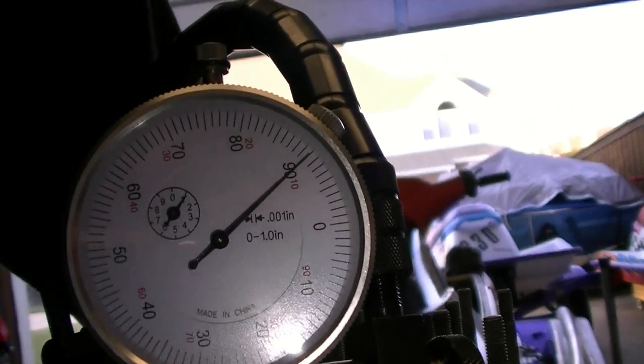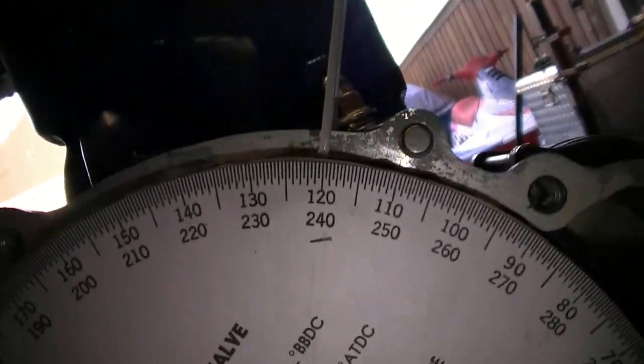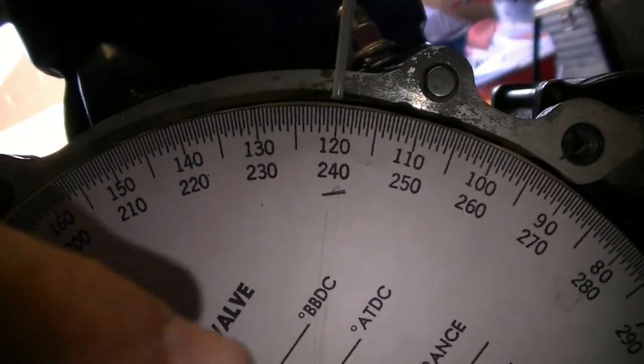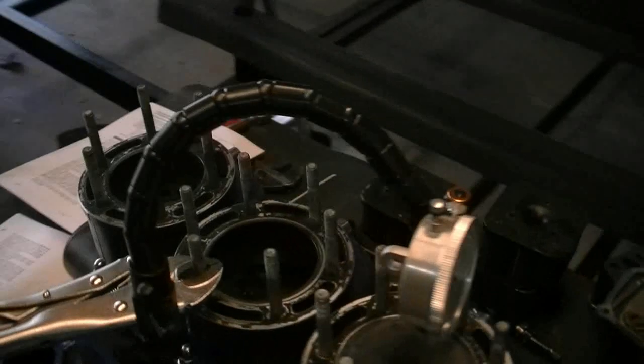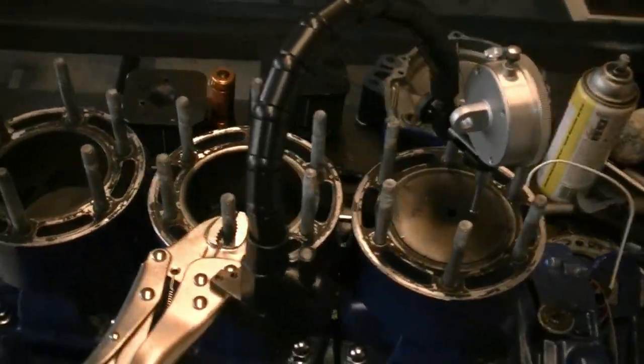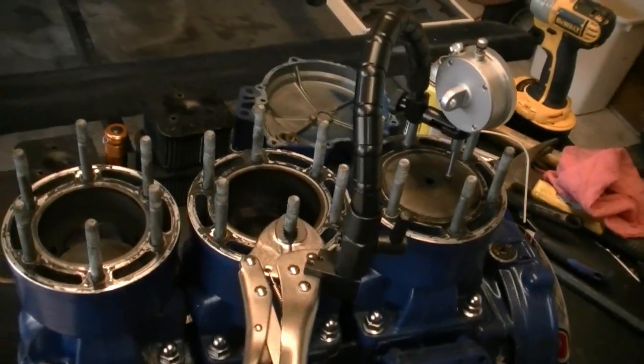So zero it out zero and then take it back down to 90, which is just basically that difference there. And that takes us, that shows that we're at 120 on this one. That's our starter point. Notice I wrote number one there. So I've got number one. So now we're going to move this to the center cylinder and get it all set up again.